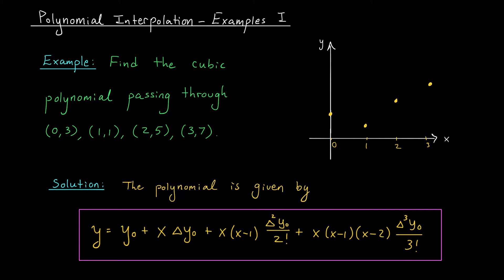This is fantastic, because it means that we just need to find y naught, delta y naught, delta squared of y naught, and delta cubed y naught. That will give us our polynomial.